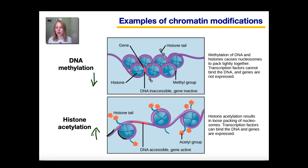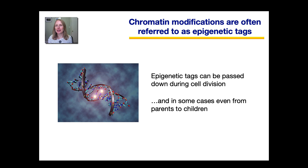These chromatin modifications are often referred to as epigenetic tags. For example, the addition of methyl groups to the DNA molecule is an epigenetic tag, and it can be passed down during cell division. In some cases, epigenetic tags can even be passed down from parents to children. The study of the inheritance of these chromatin modifications is often referred to as the field of epigenetics.